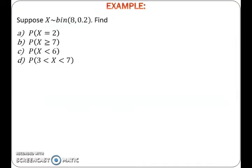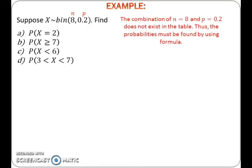Let's look at an example. Suppose that a random variable X has a binomial distribution with N equals 8 and P equals 0.2. The combination of N equals 8 and P equals 0.2 does not exist in the table. Thus, the probabilities must be found by using the formula.